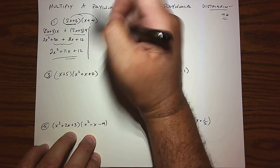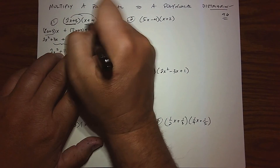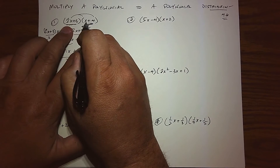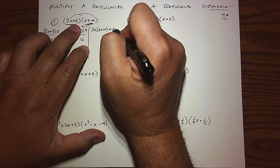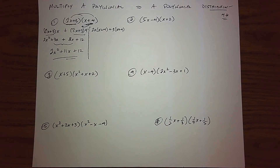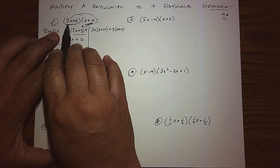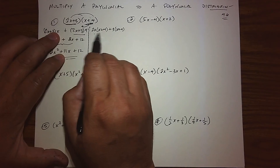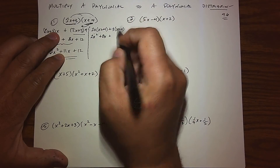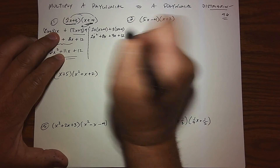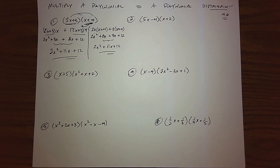Just to show that it doesn't matter which way we distribute: instead of distributing the right binomial into the left, let's take the left and distribute it the other way. We get 2x times (x+4) plus 3 times (x+4). That way might seem more natural — we're used to distributing from the left. Distributing 2x gives 2x squared plus 8x; distributing 3 gives 3x plus 12. Combining like terms: 2x squared plus 11x plus 12 — the same result.